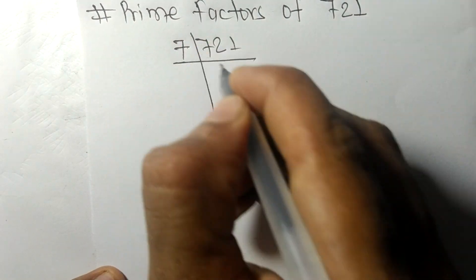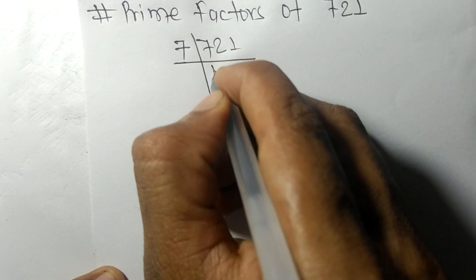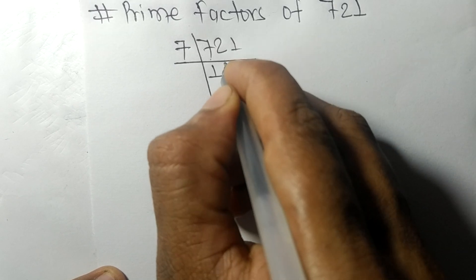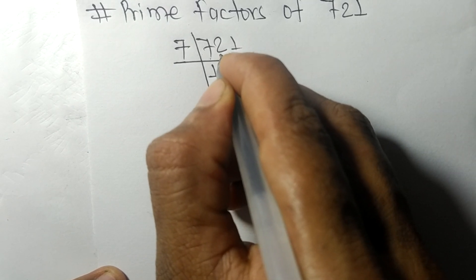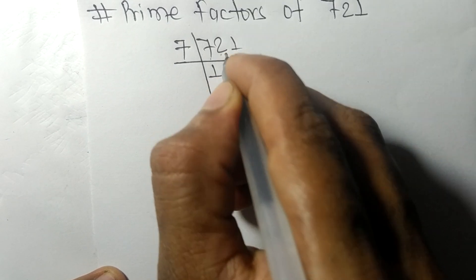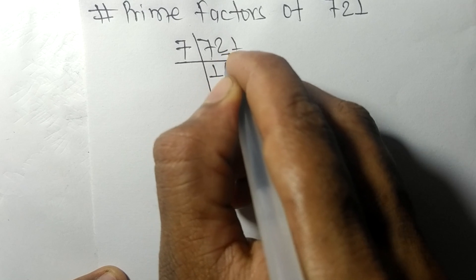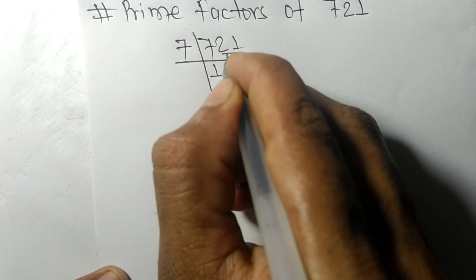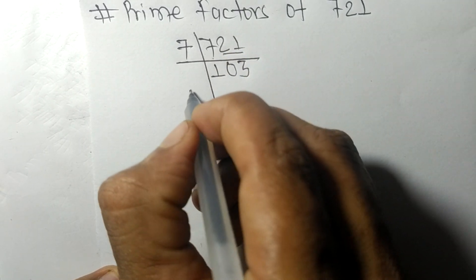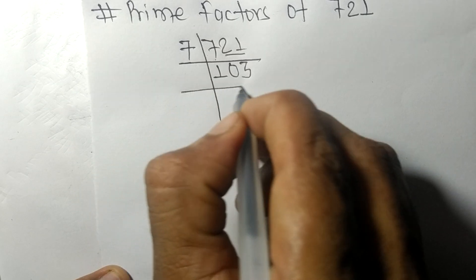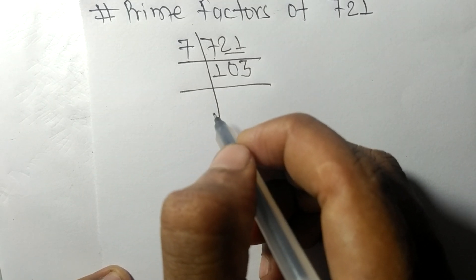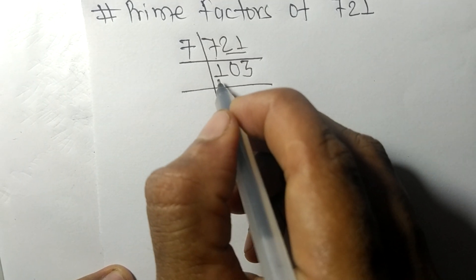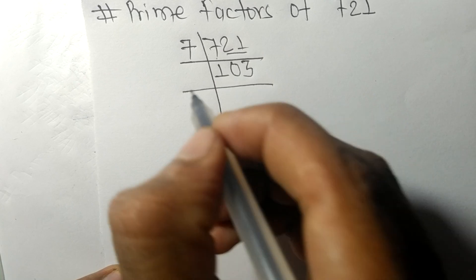...by 7. 7 times 1 is 7, 7 times 0 is 0, remainder 2, and now it is 21. 7 times 3 is 21. So now we get 103, which is a prime number, so it is divisible...